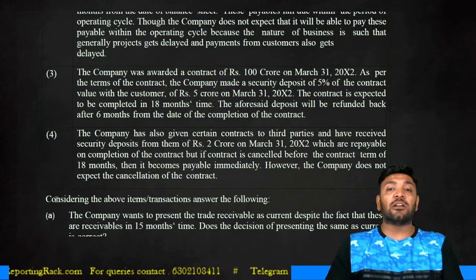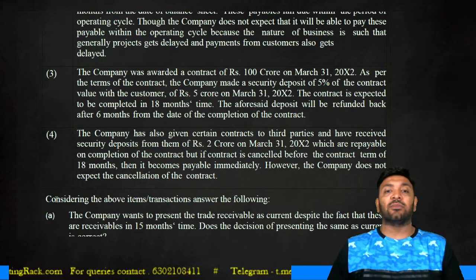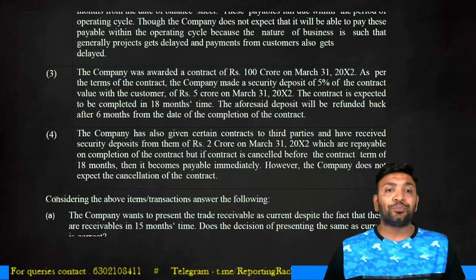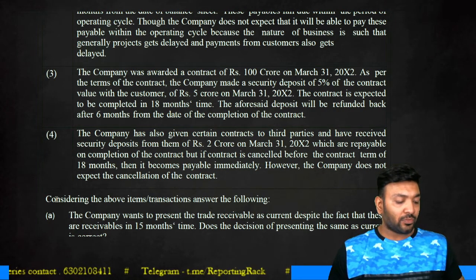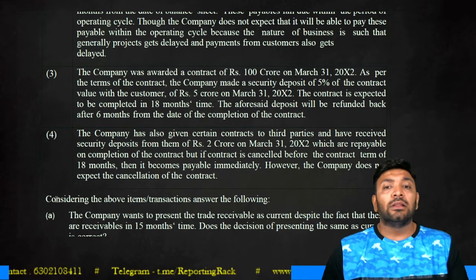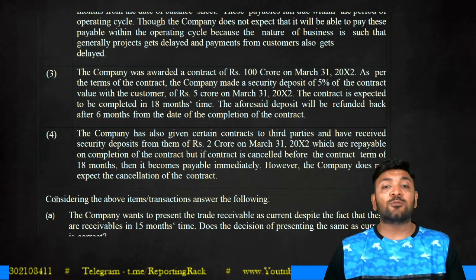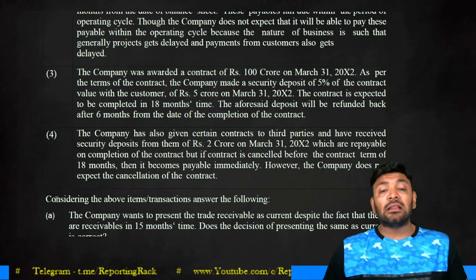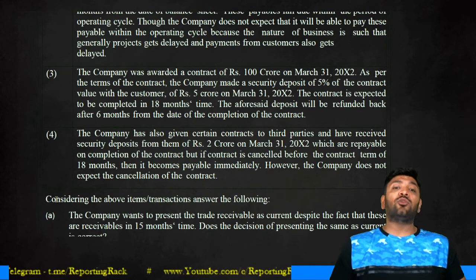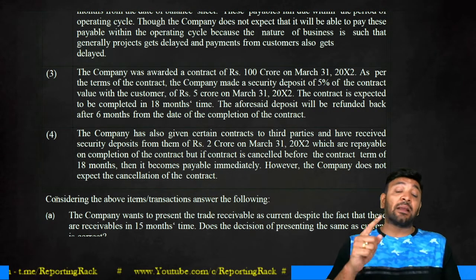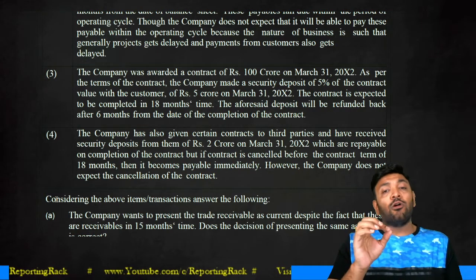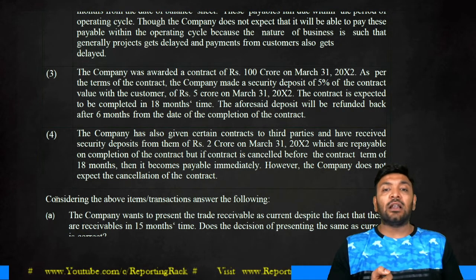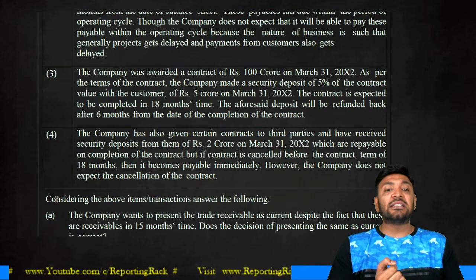The company has been awarded a contract of 100 crores. As per the terms, the company made a security deposit of 5% of the contract value — 5 crores — on 31st March 2012. The contract is expected to be completed within 18 months; therefore the deposit is refundable six months after completion of the contract. That means it is 24 months in total, therefore this cannot be classified as current — it should be classified as a non-current asset.